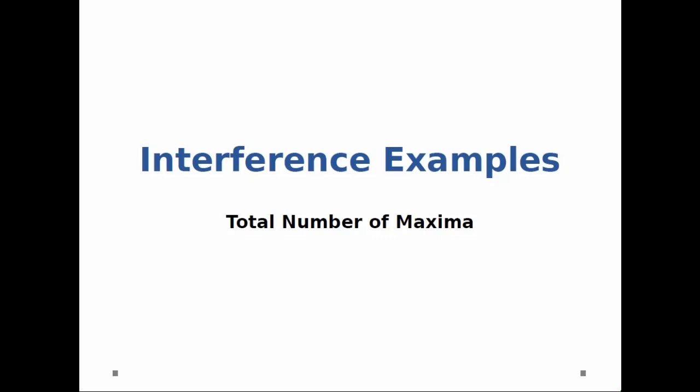In this example, we're going to look at interference, specifically the total number of maxima that you can see from a double slit experiment.